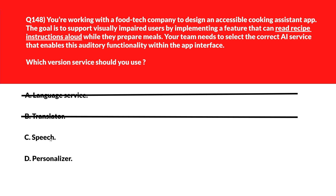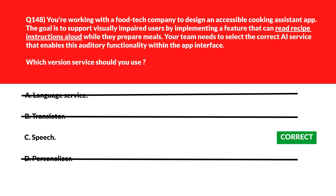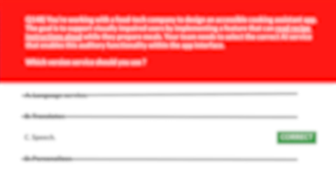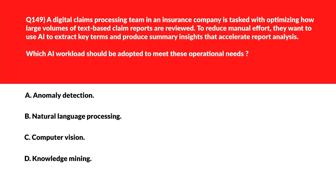Option C: Speech offers text-to-speech capabilities suited for reading content aloud to users — we'll keep this. Option D: Personalizer optimizes content relevance but doesn't produce voice-based output from text, unlike Speech. So option C, Speech, is the correct choice.